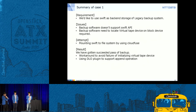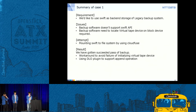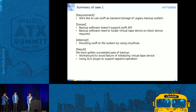Summary of case one: the requirement was to use Swift as backend storage of a legacy backup system. Issues were that the backup software does not support the Swift API and requires a virtual tape device on block storage. Our attempt was mounting Swift to the file system using CloudFuse. The result was a successful backup path, with workarounds to handle virtual tape device initialization and using the DLO plugin to support append operations.